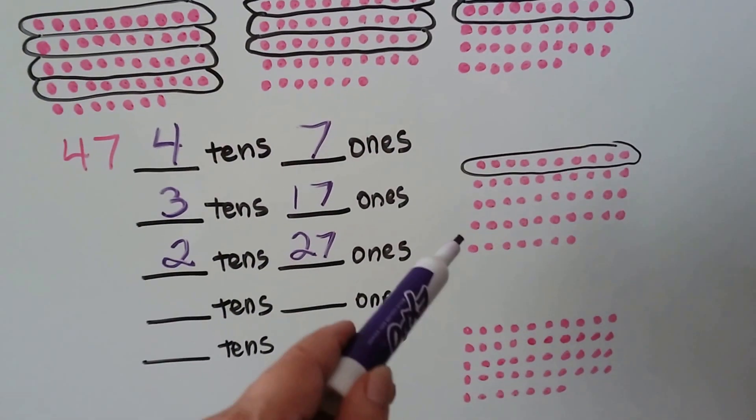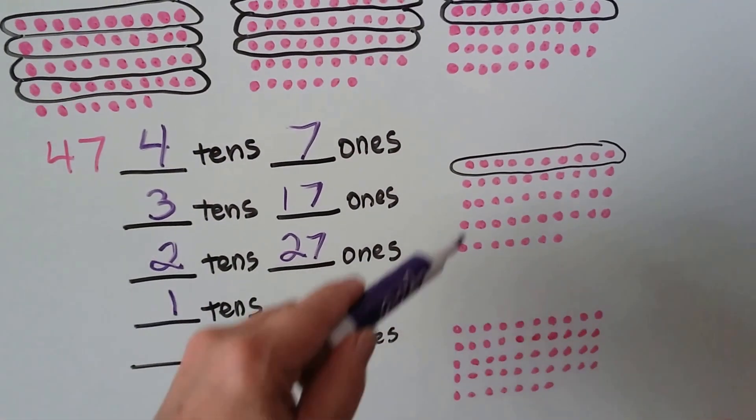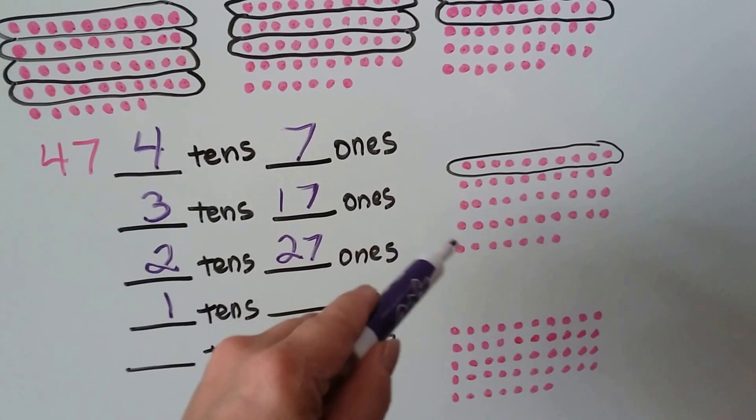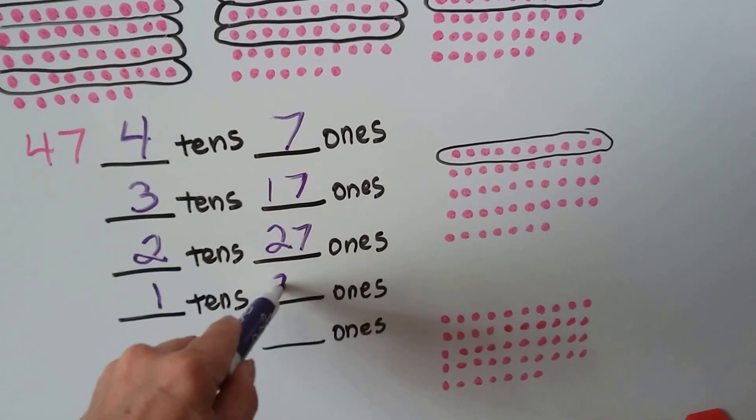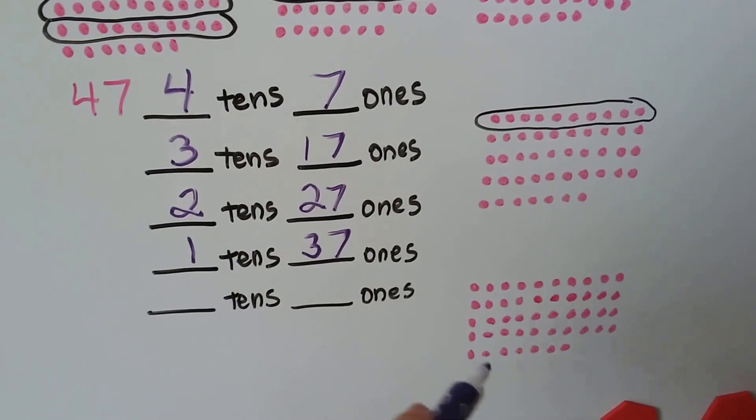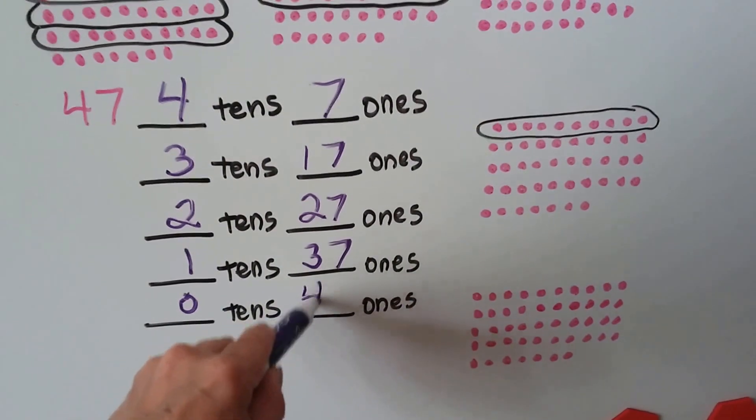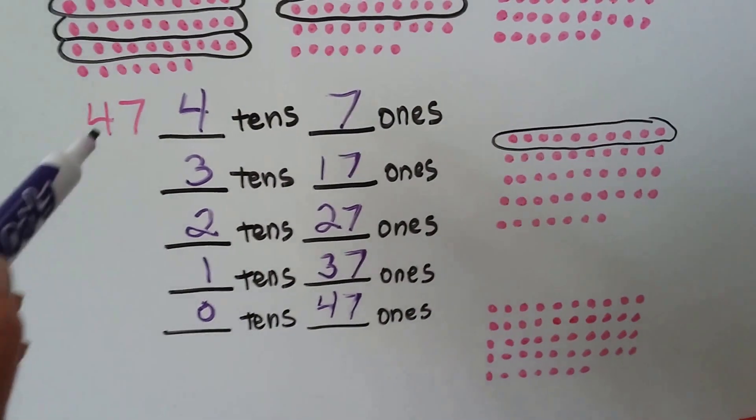And we can regroup it as 1 tens and 37 ones. And we can also regroup it as no tens and 47 ones.